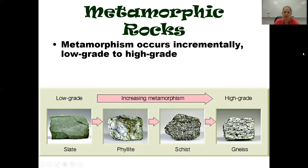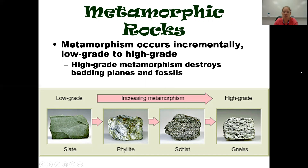Some metamorphic rocks turn into other metamorphic rocks. Starting as slate, with more metamorphism — more heat, pressure, and chemically active fluids — it becomes a phyllite, then a schist, then gneiss. That's low grade to high grade metamorphism. Too much metamorphism, however, can potentially destroy fossils and bedding planes, which are really important for figuring out our geologic history — causing pieces of our puzzle to be missing.